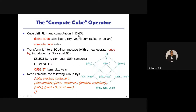In SQL, the same operation uses a new operator called CUBE BY. You write SELECT followed by the three dimension names — item, city, and year — then a comma and SUM(amount). Next, write FROM sales, where 'sales' is the table name. The final step is CUBE BY item, city, year. This is how the cube is formed using SQL.